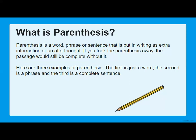Here are some examples of parenthesis. The first time it's just a word, the second time it's a phrase, and the third time it's a complete sentence — all of which are correct. The narcissist daffodil is a spring plant with yellow petals. You'll notice the way that my voice changes as I read this. That's something the writer puts in to help the reader know how to pronounce the sentence and know where pauses or changes in emphasis are necessary. I want you to read the next one out loud and see if you can get that emphasis correct.